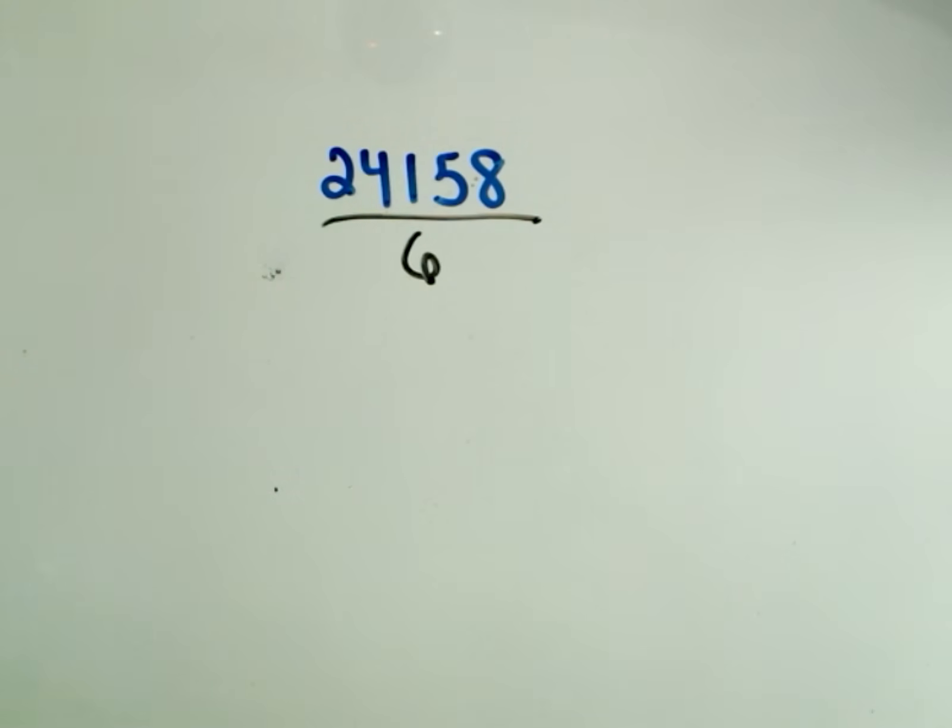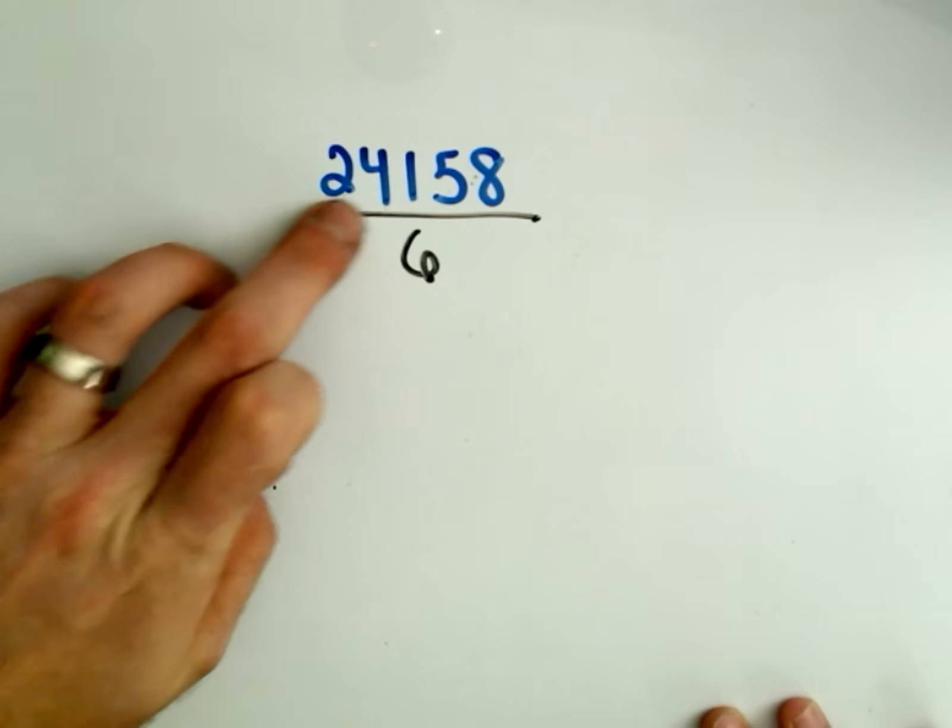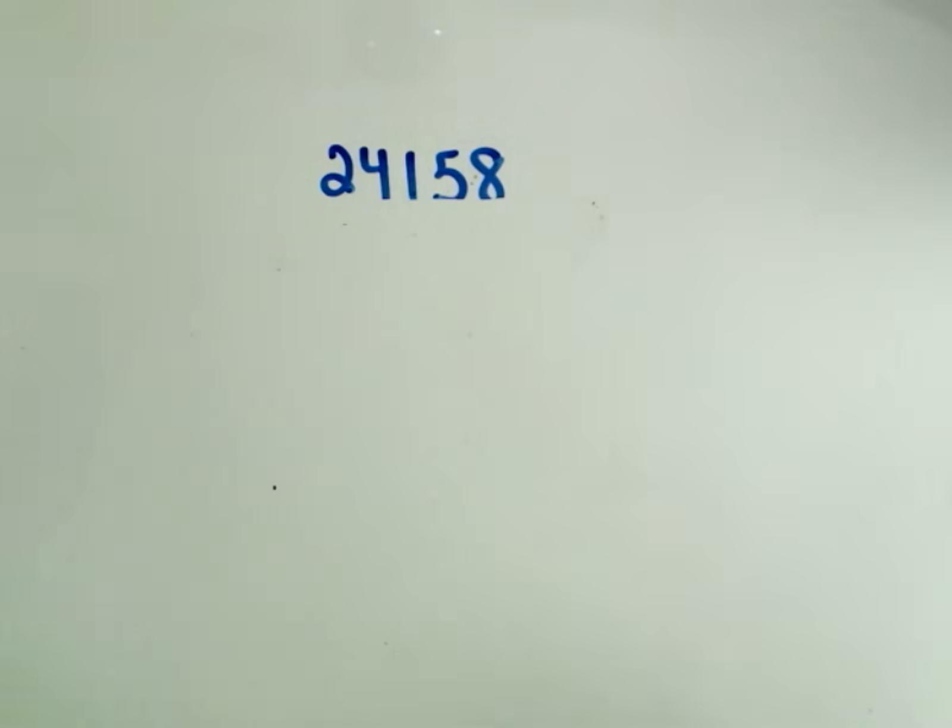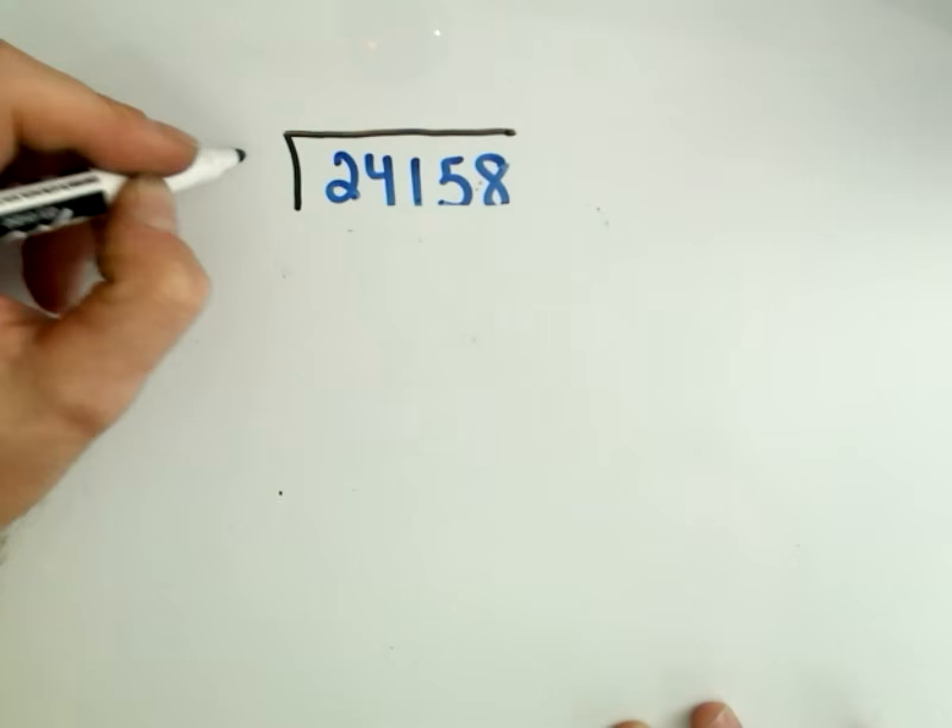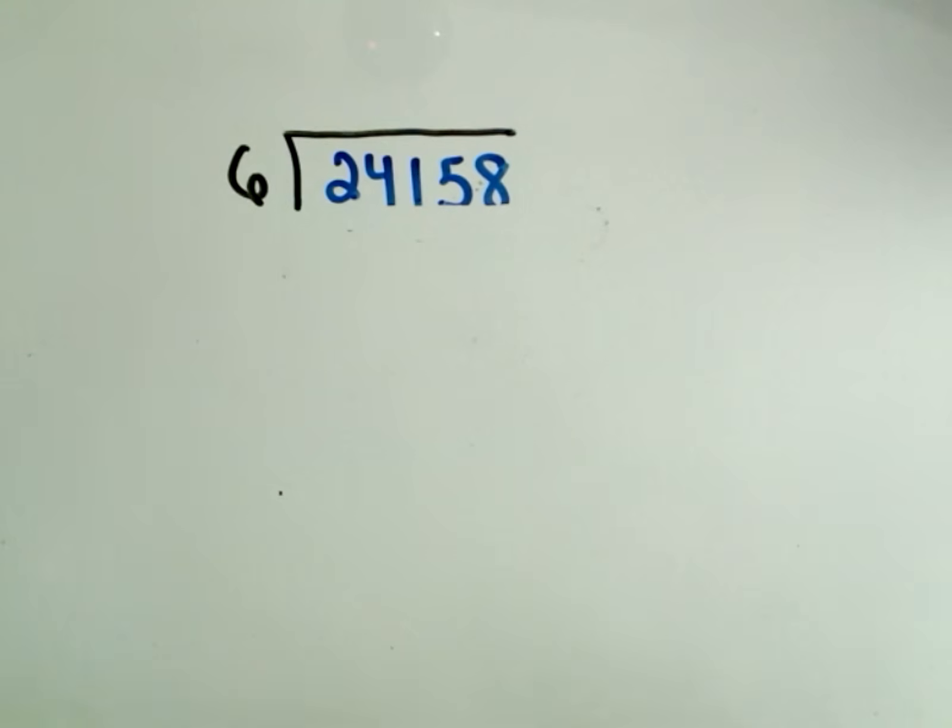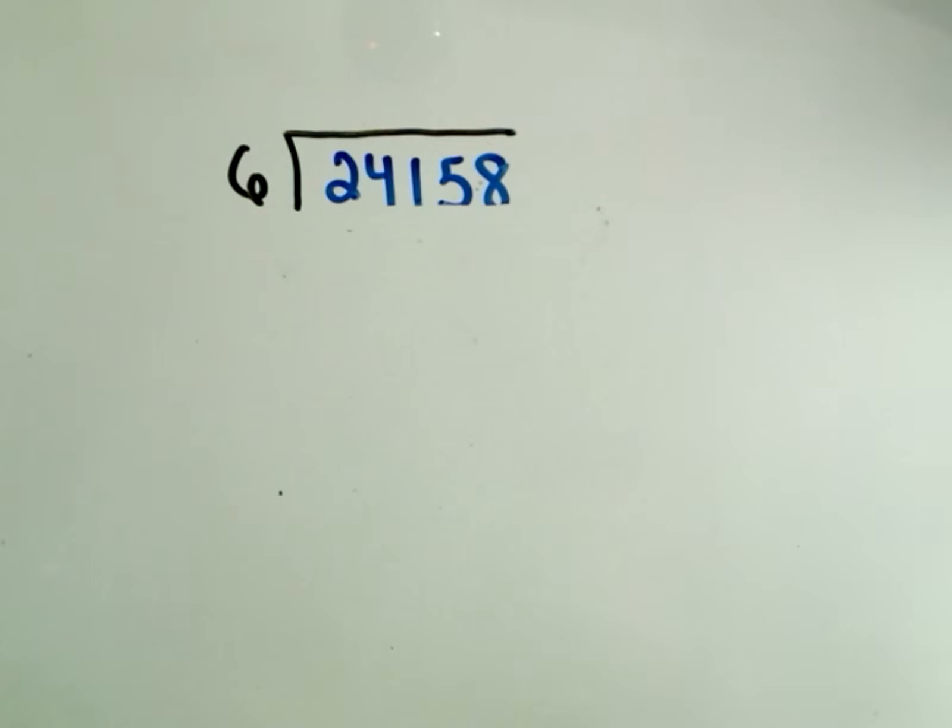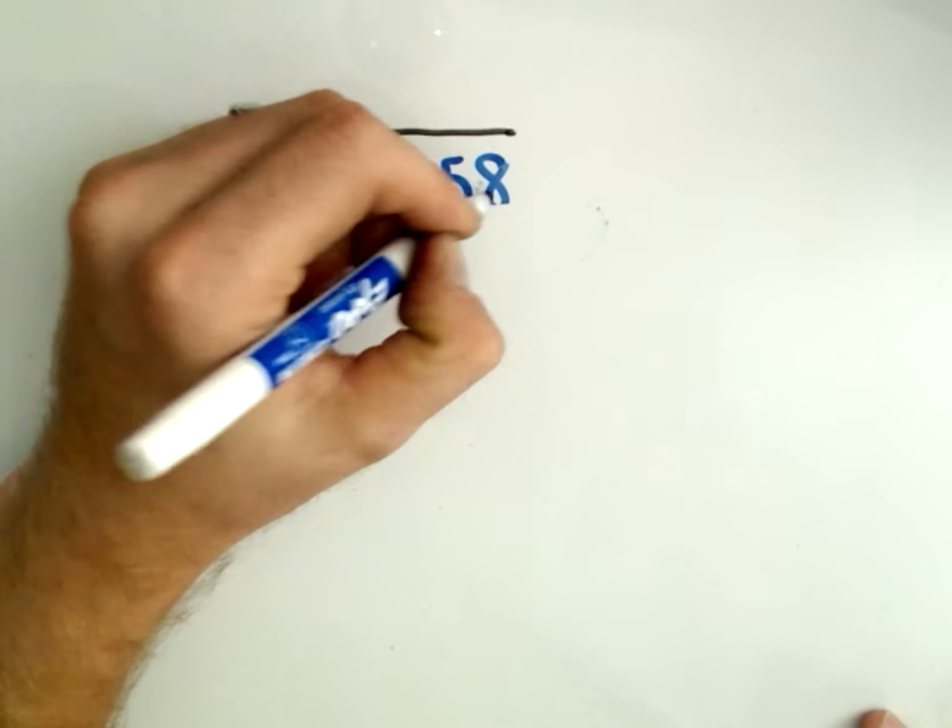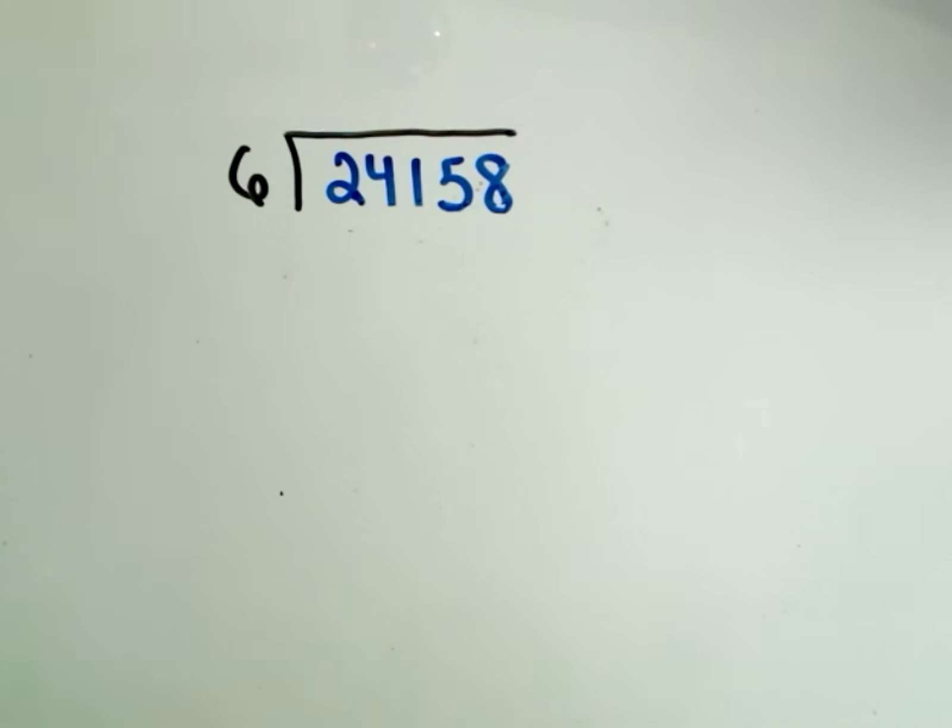So the number I want to do here is 24,158 divided by 6, so nothing too crazy. Whenever we're dividing, usually when we do long division, we'll make the little bar and then put the number out front. Remember that the thing underneath is called the dividend, and the thing out front is called the divisor. So we have a divisor of 6 and a dividend of 24,158.